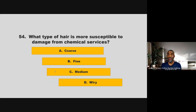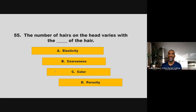What type of hair is more susceptible to damage from chemical services? Is it coarse, fine, medium, or wiry? If you chose B, fine, you are correct. The number of hairs on the head varies with the blank of the hair — elasticity, coarseness, color, or porosity? If you chose C, color, you are correct.